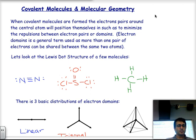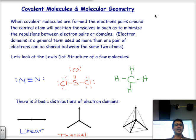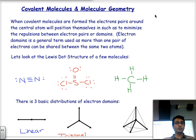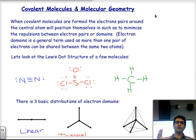Covalent compounds are formed by the sharing of electrons between atoms in order to have filled valent shells, and those electrons are going to be distributed around a central atom. The electron pairs, or electron domains, repel each other because they are composed of electrons, which have negative charges. In order to minimize repulsion, molecules will take certain shapes that will place electron domains as far as possible from each other.